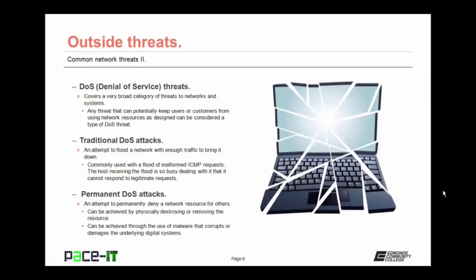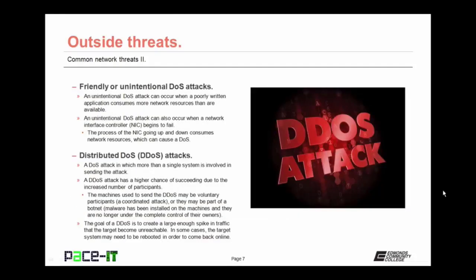Then there's the permanent DOS attack — an attempt to permanently deny a network resource for others. It can be achieved by physically destroying or removing the resource, or through the use of malware that corrupts or damages the underlying digital system to the point where it cannot be repaired and must be replaced. There are also friendly or unintentional denial of service attacks. An unintended DOS attack can occur when poorly written applications consume more network resources than are available. Another unintentional DOS can occur when a network interface controller, or NIC, begins to fail, going offline and coming back online repeatedly and rapidly, consuming network resources.